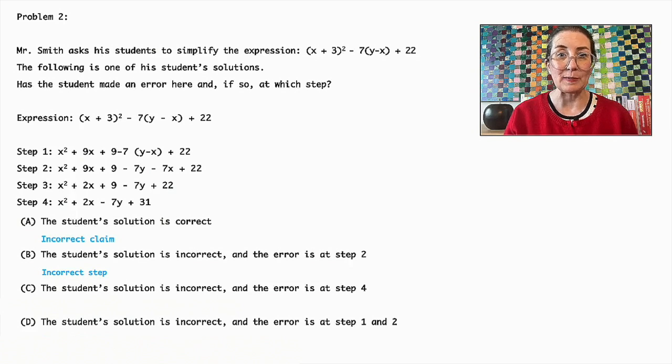This is correct because step 2 incorrectly distributes -7 over the terms inside the parentheses. It should be -7y + 7x, not -7y - 7x.